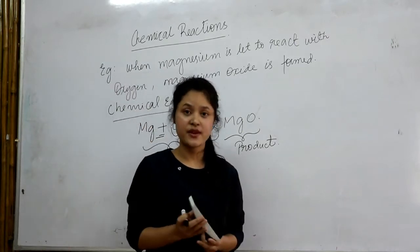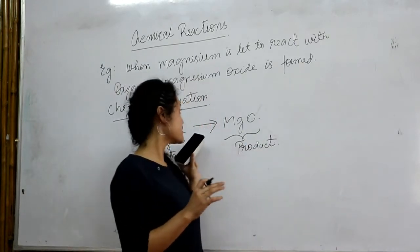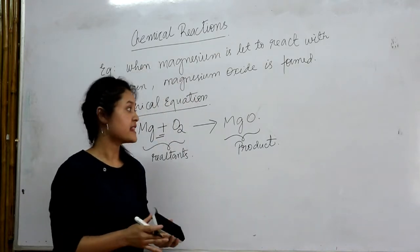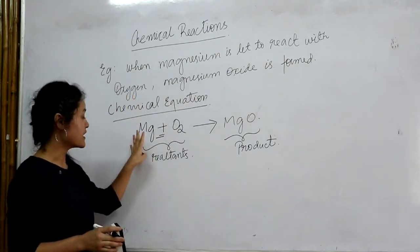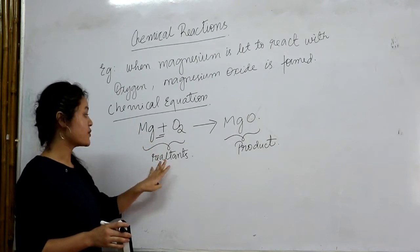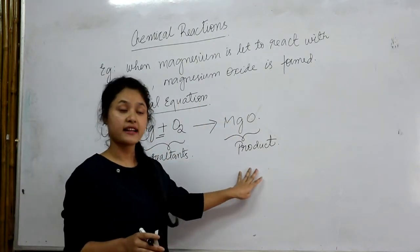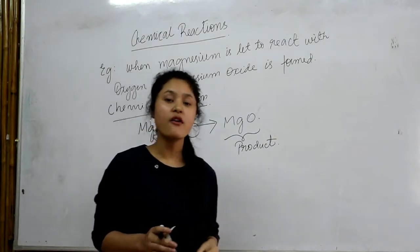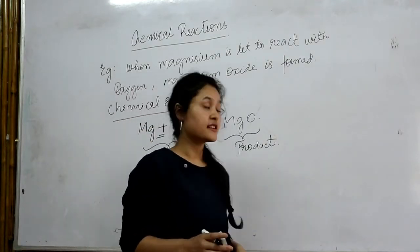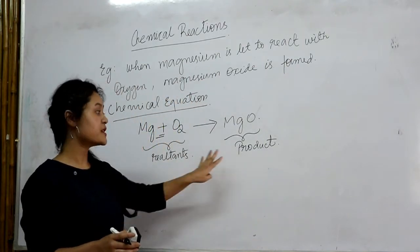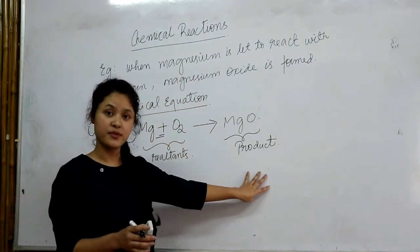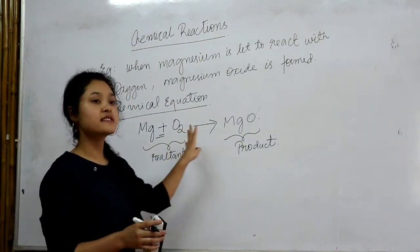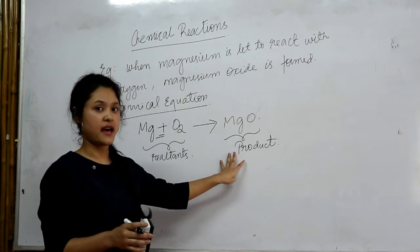In a chemical equation, the equation must always be balanced. That means the number of atoms on the reactant side should be equal to the number of atoms on the product side. Because of the law of conservation of mass, the total mass on the reactant side should equal the total mass on the product side. If we look at this particular example, this chemical equation is not yet balanced.